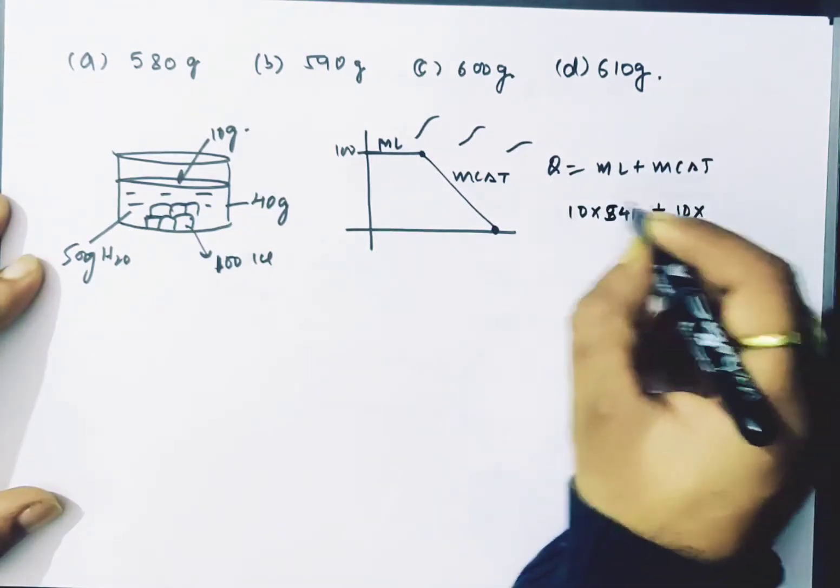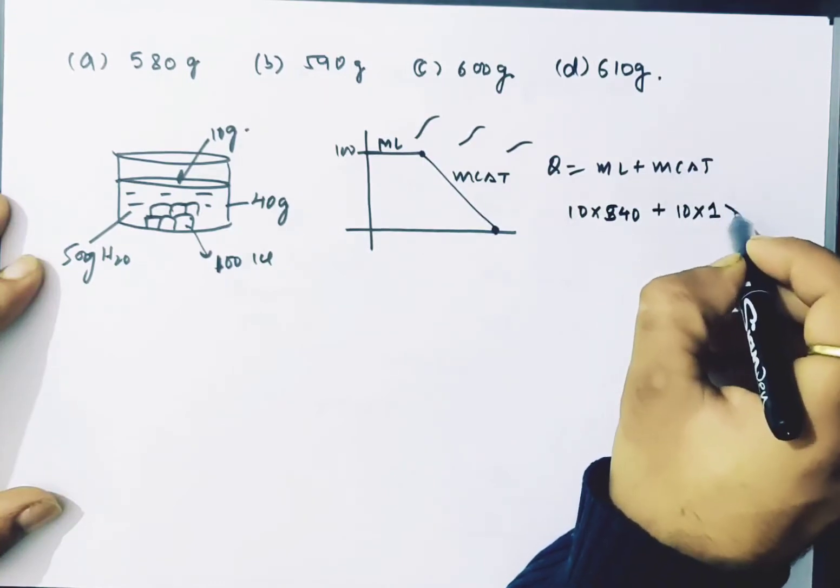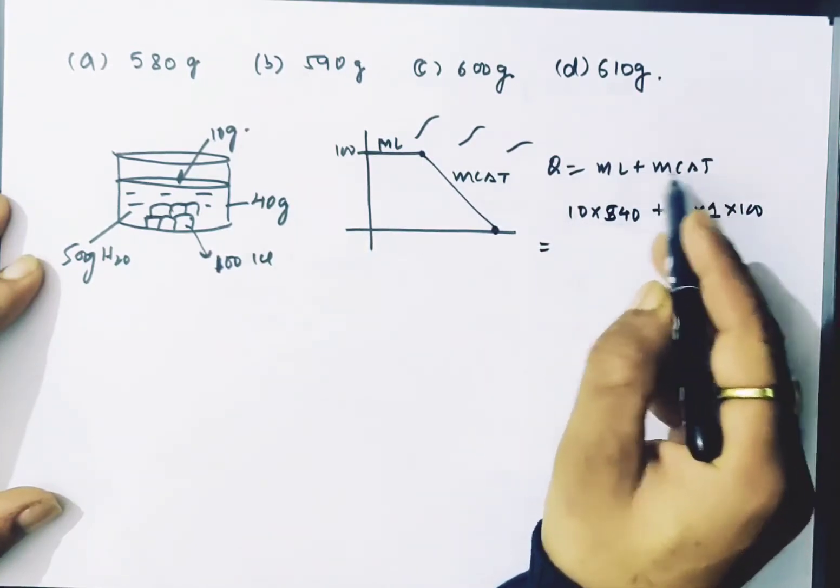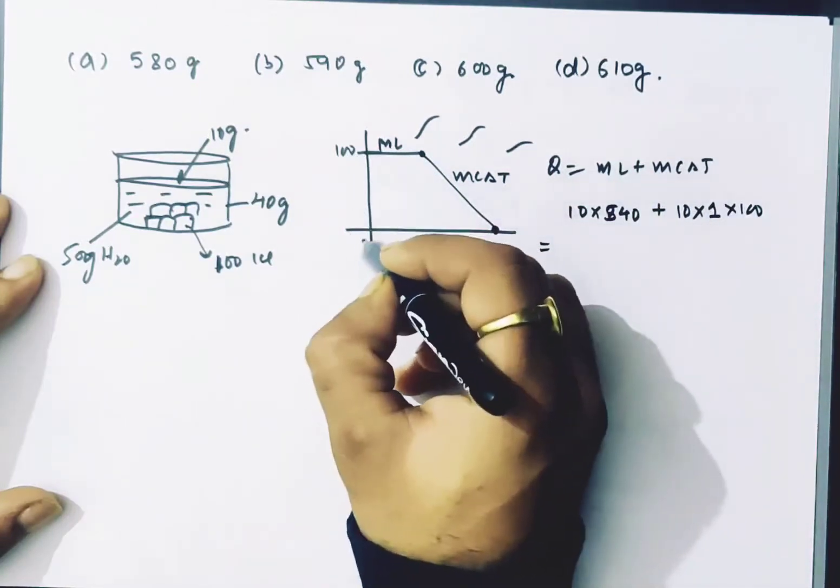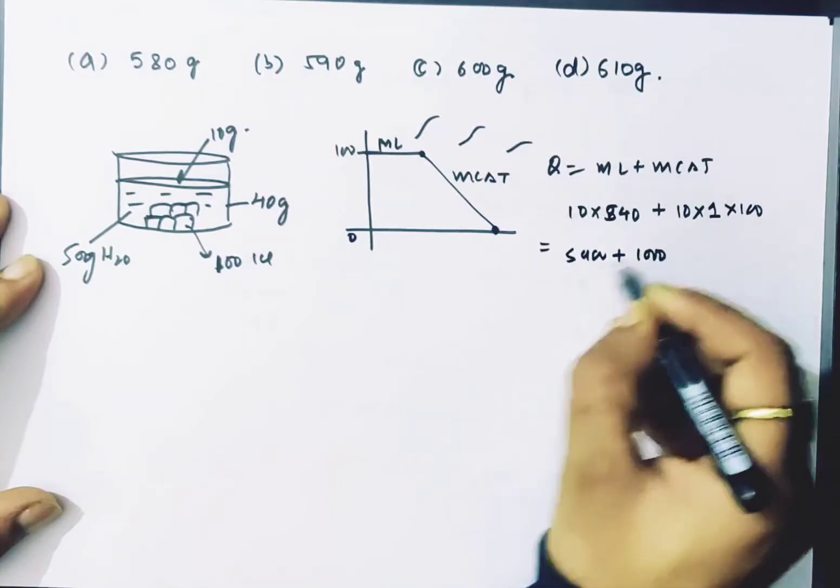Plus mass 10 grams, specific heat 1 in CGS units, and the temperature is 100. So we have 10 times 540 plus 10 times 1 times 100, which equals 5400 plus 1000, that is 6400 calories.